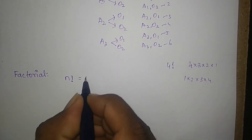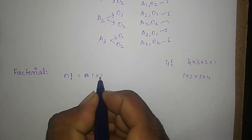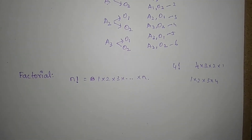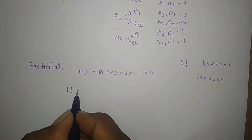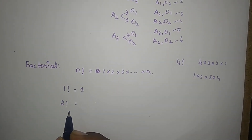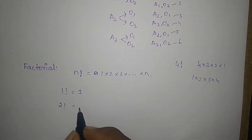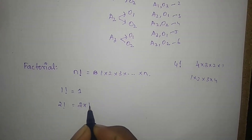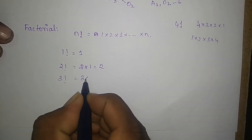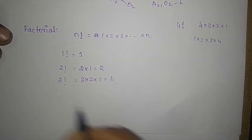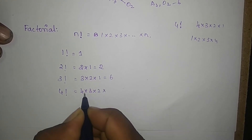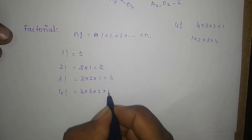n factorial equals 1 into 2 into 3 into ... into n. For 1 factorial, it is 1. For 2 factorial, it is 2 into 1 equals 2. For 3 factorial, 3 into 2 into 1 equals 6. For 4 factorial, 4 into 3 into 2 into 1 equals 24.